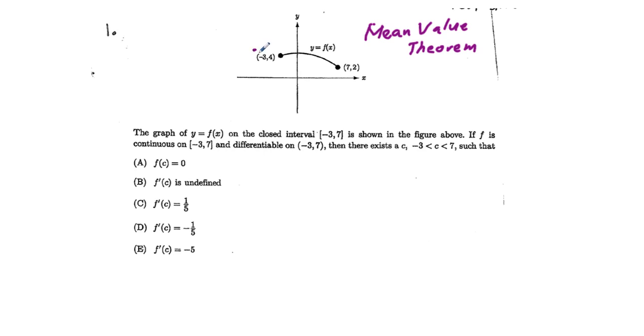the slope of the secant line between the endpoints. This purple line is a secant line between these two points, which we're going to call input values A at x equals negative 3, and B at x equals 7.